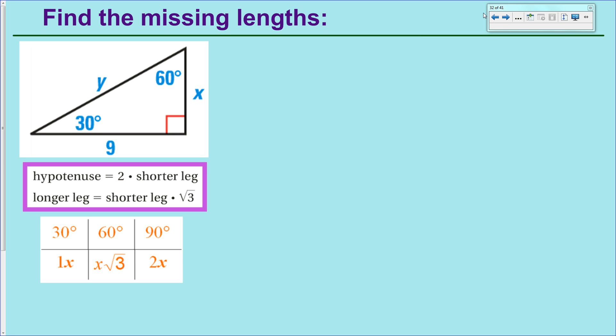Next example. Take a look at this one. Copy this down. This is obviously a 30, 60, 90 triangle. And, I want you to notice that this one, you couldn't solve by a Pythagorean theorem. So, take a moment and write this down. And, we'll get started on this using the equations.